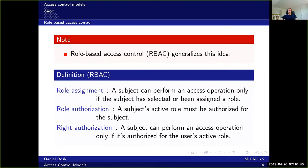Role-based access control generalizes this idea. A role basically maps quite nicely to a group, but role-based access control allows more different semantics. It has these three rules: first, role assignment, which says that a subject can perform an access operation only if the subject has selected or been assigned a role — you need a role to do anything in this system. The second rule, role authorization, says that a subject's active role must be authorized for the subject, which means you cannot choose roles as you like — you have to be authorized to choose the role.